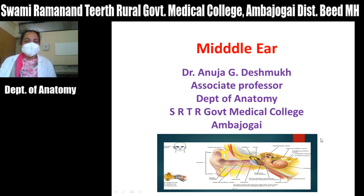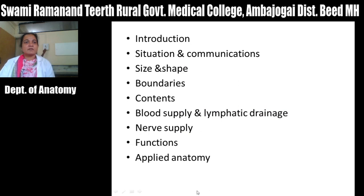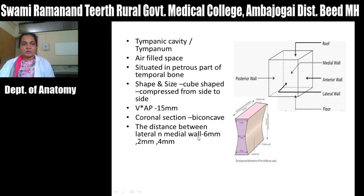Good morning everybody. Today we will see the next topic, that is the middle ear. In the last lecture we have seen the external ear and tympanic membrane. In the middle ear we will see under the following headings: introduction, situation, where it is situated, what are the communications of middle ear, size and shape of middle ear, what are the boundaries and relations of this middle ear cavity, contents of middle ear cavity, then blood supply, lymphatic drainage, nerve supply, functions of middle ear, and lastly applied anatomy of middle ear.